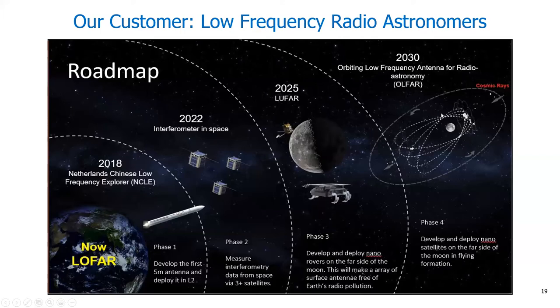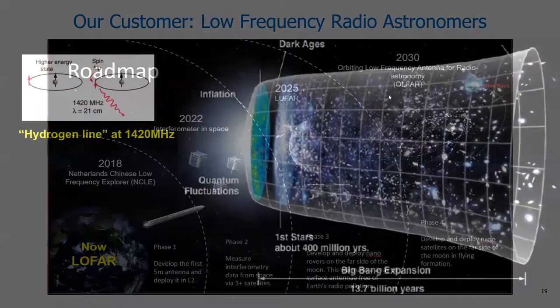With a few of them we can form a radio telescope at the far side, at the moment called LUFAR. We want to have a swarm of nano satellites in moon orbit that can be a huge radio telescope for low frequencies.